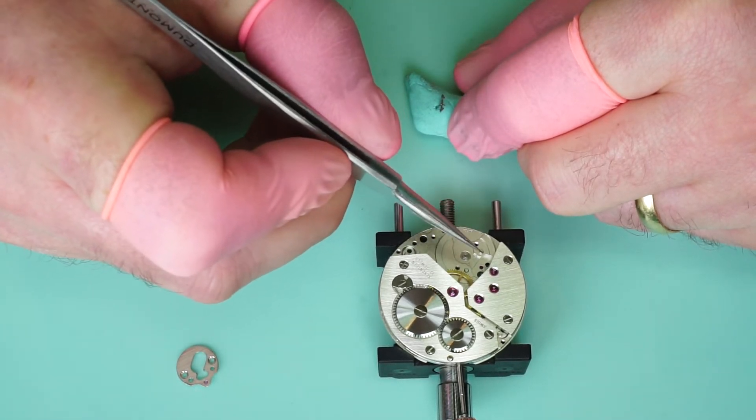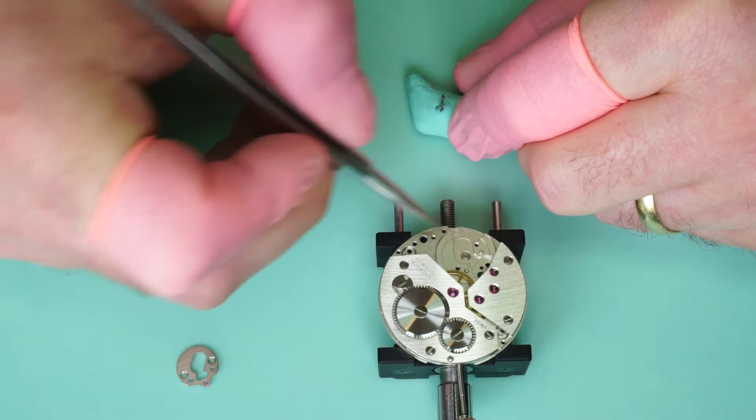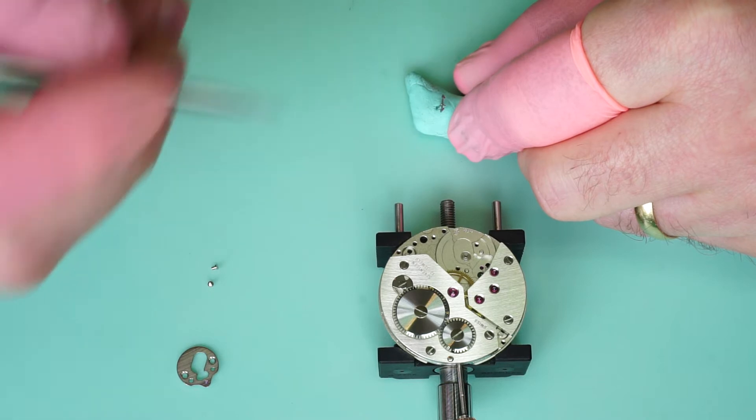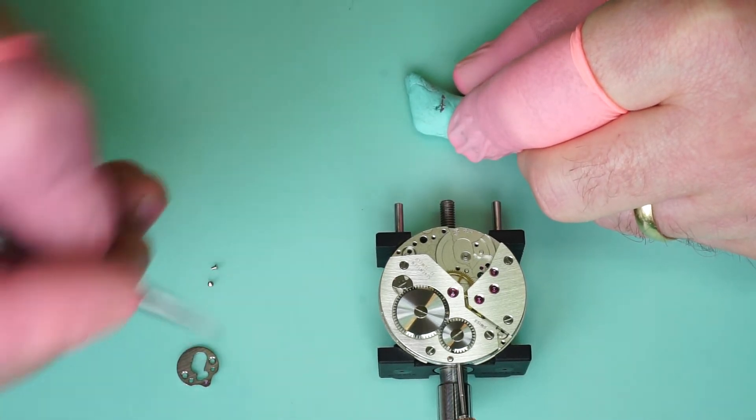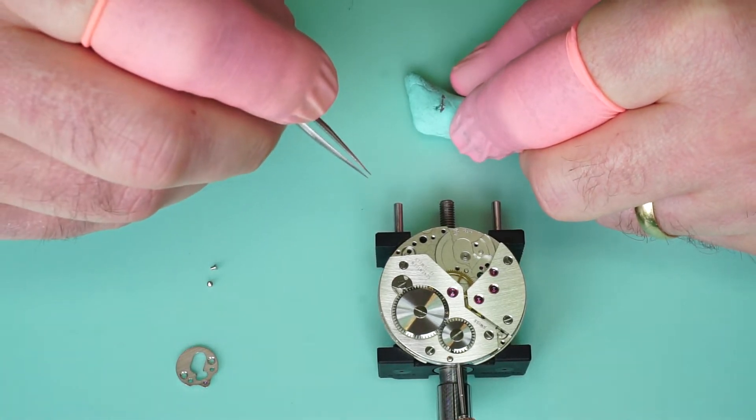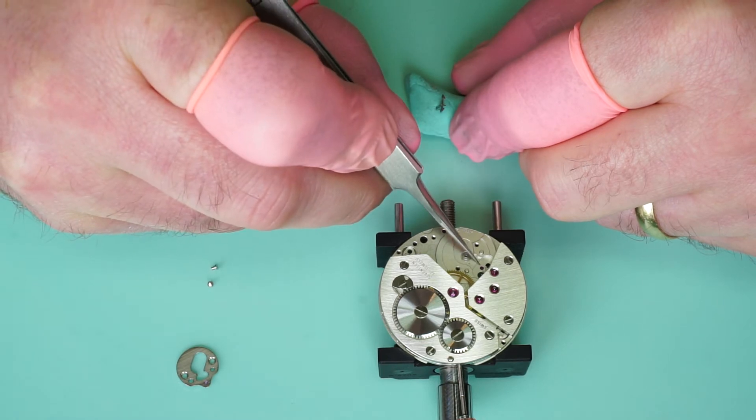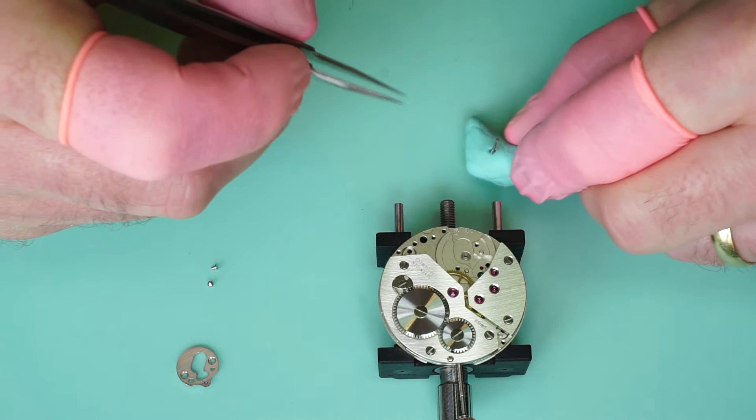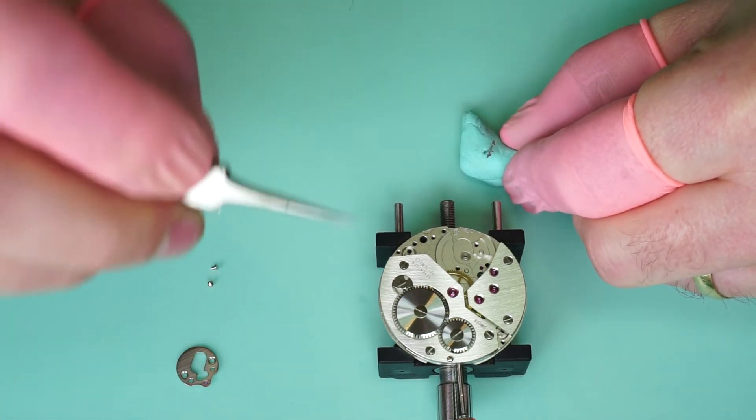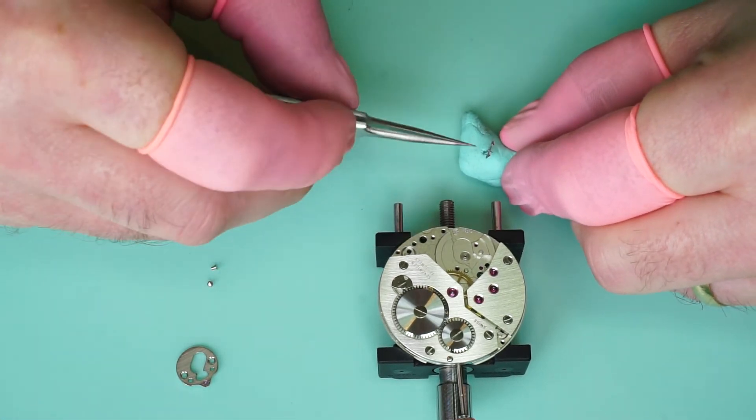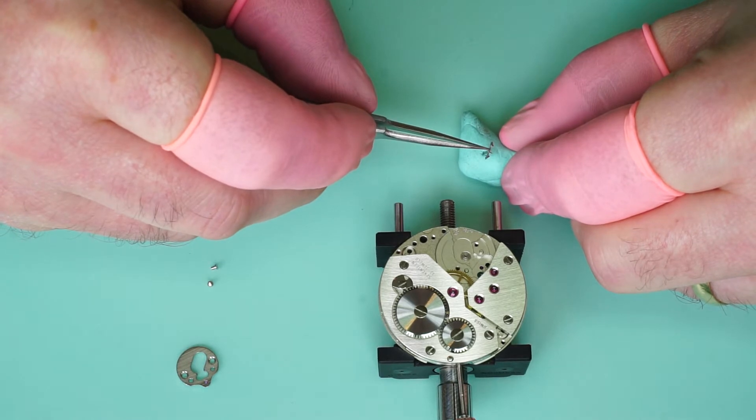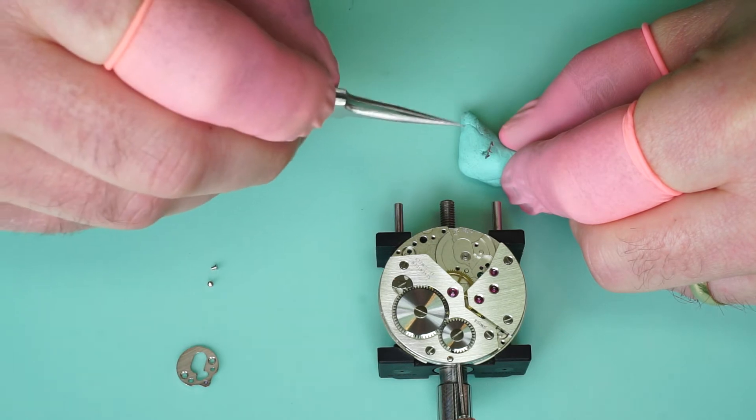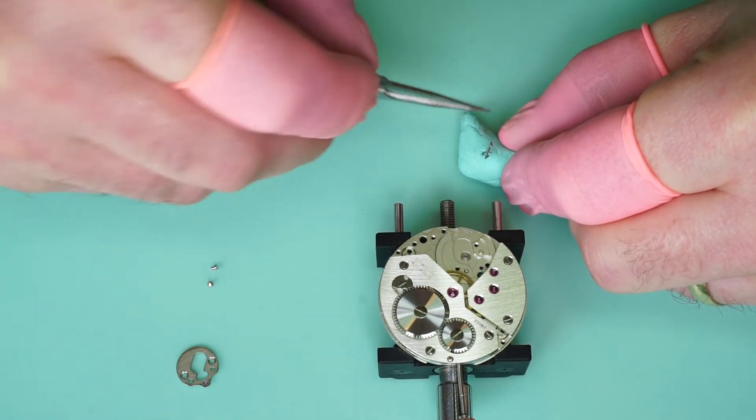There is no need to add lubrication to this jewel or the cock jewel because you're only actually more likely to increase drag than help the watch. So you don't need to add lubrication to these jewels. On most Swiss movements you only lubricate the entry stone on the pallets, but on some movements the pallets require some lubrication on both stones.